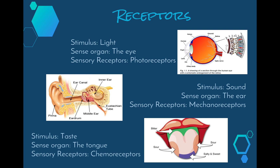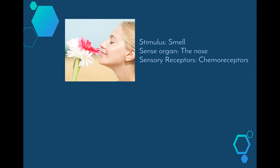Next we have a chemical stimulus which is detected by the tongue. The type of sensory receptors found in our taste buds are called chemoreceptors, and their job is to detect the dissolved molecules that are found in our food. We also have another chemical stimulus which is smell. Our nose is used to detect this stimulus — again our sensory receptors are also chemoreceptors but this time they're found in our nasal passage rather than our taste buds. Their job is to detect different molecules in the air and send messages to our brain in order to interpret those molecules as a smell.